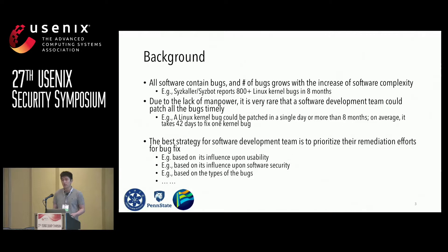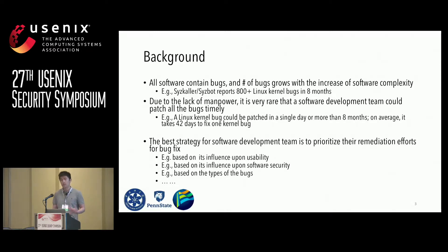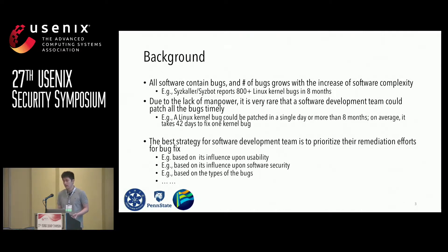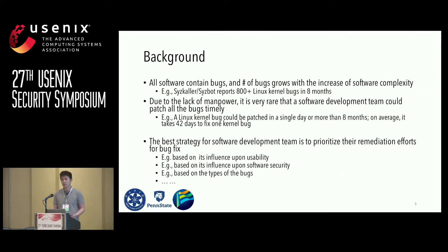All software contains bugs, and the number of bugs grows with the complexity of the software. For example, an open source Linux kernel fuzzer, Syzkaller, has identified more than 800 Linux kernel bugs in the past eight months. However, due to the lack of manpower, it is rare for software development teams to have enough time to fix all bugs timely. Therefore, many teams use strategies to prioritize their bug remediation efforts.